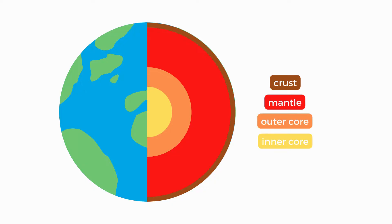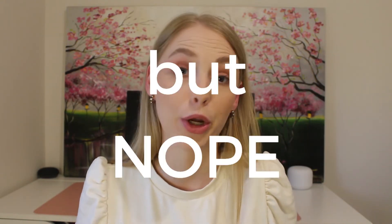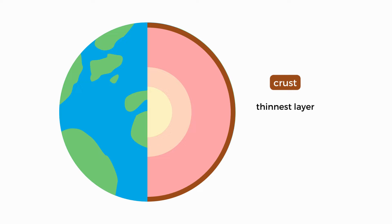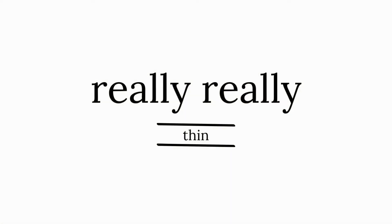Let's talk about the crust first. Most people might assume that the crust is quite thick — it is the only thing separating us from boiling hot magma. But nope. The crust is the thinnest layer, ranging between about 6 and 70 kilometres thick. It's kind of like the skin of an apple in comparison to the rest of the apple. Basically, the crust is really, really thin compared to the other layers.